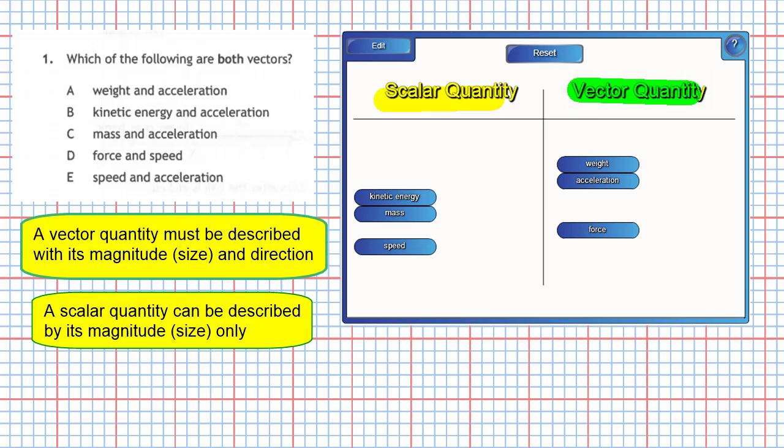Let's begin with the scalar quantities in these questions. Kinetic energy, we'll mark that out. Kinetic energy is a scalar quantity, and mass is a scalar quantity. So is speed. We can drop out speed and speed there, and we have all the scalar quantities highlighted.